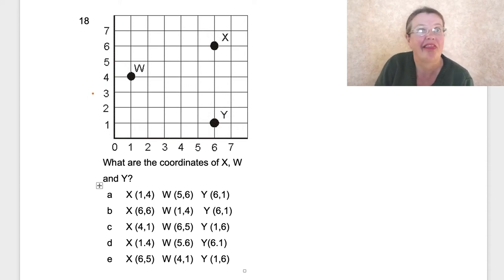We have a grid with W, X, Y. What are the coordinates of X, W, and Y? I need to be careful to get them in the right order. They want X, W, Y. I'm going to write it here: X, W, Y, and work out each one.